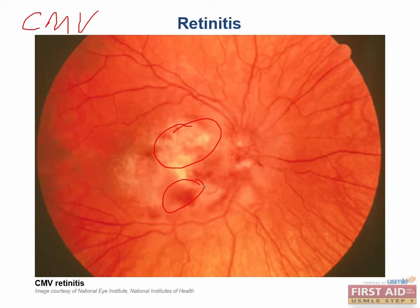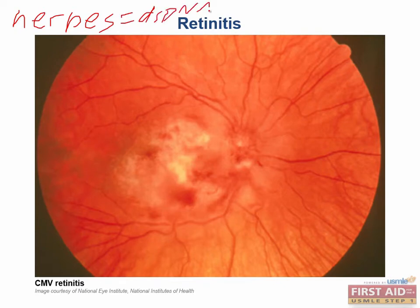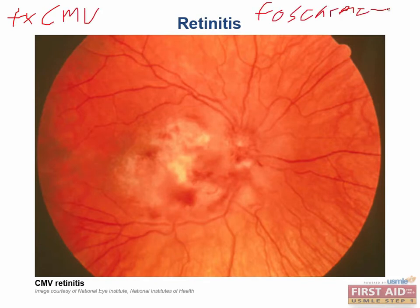What type of virus is CMV? It is a herpes virus, which means that it has double-stranded DNA. Untreated, it leads to progressive vision loss as well as blindness. You should know the treatment for CMV, which includes Foscarnet as well as Ganciclovir.